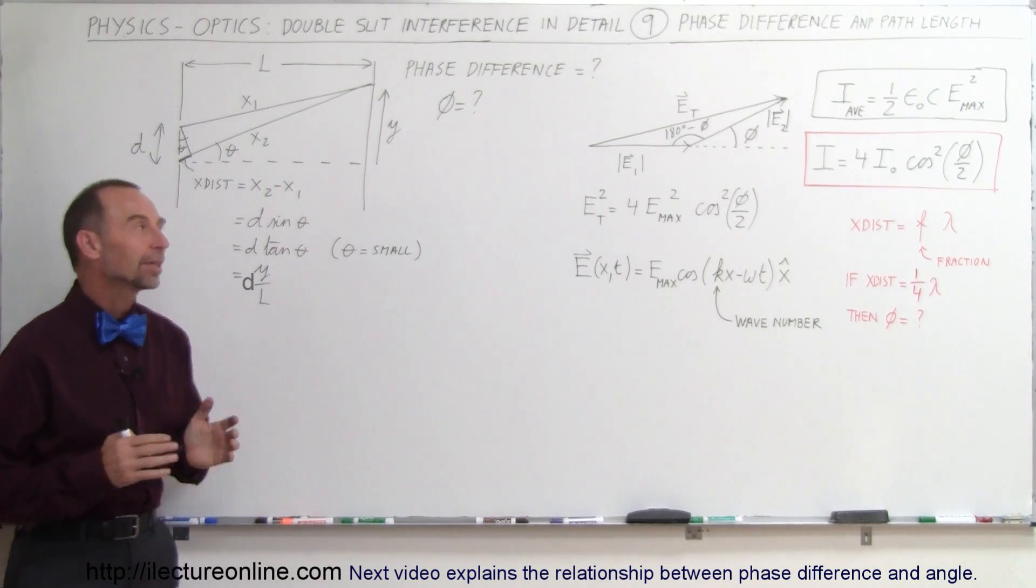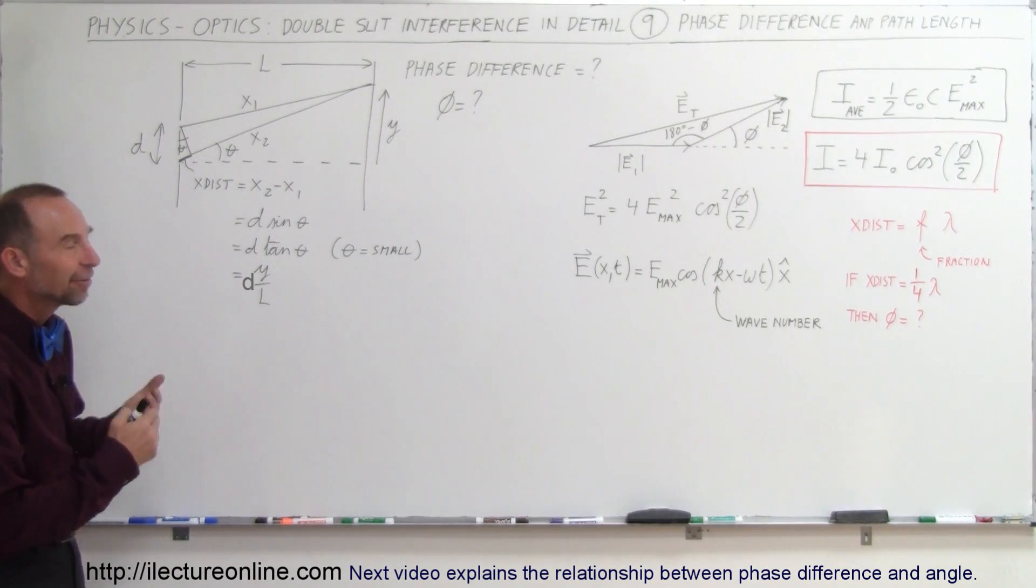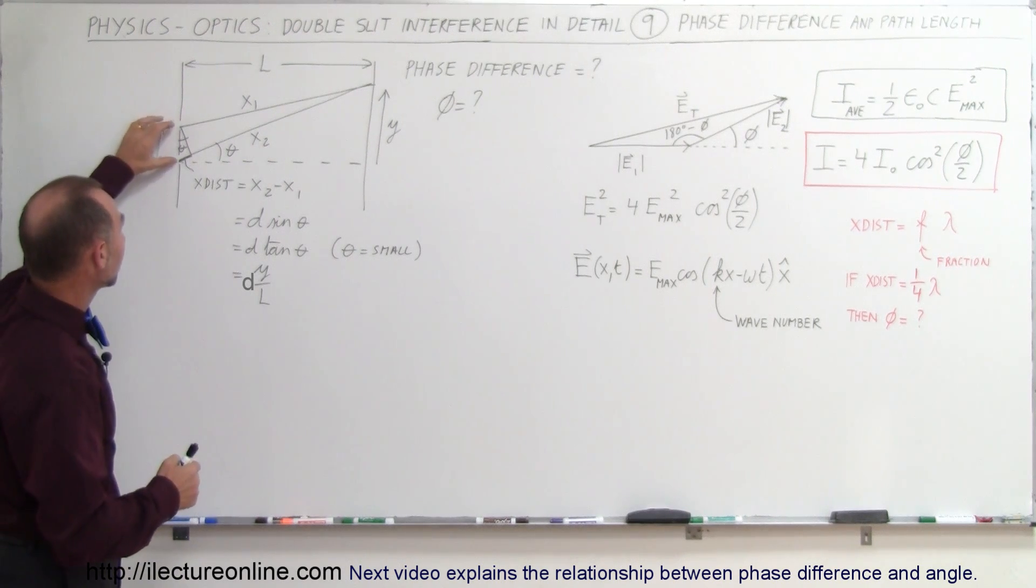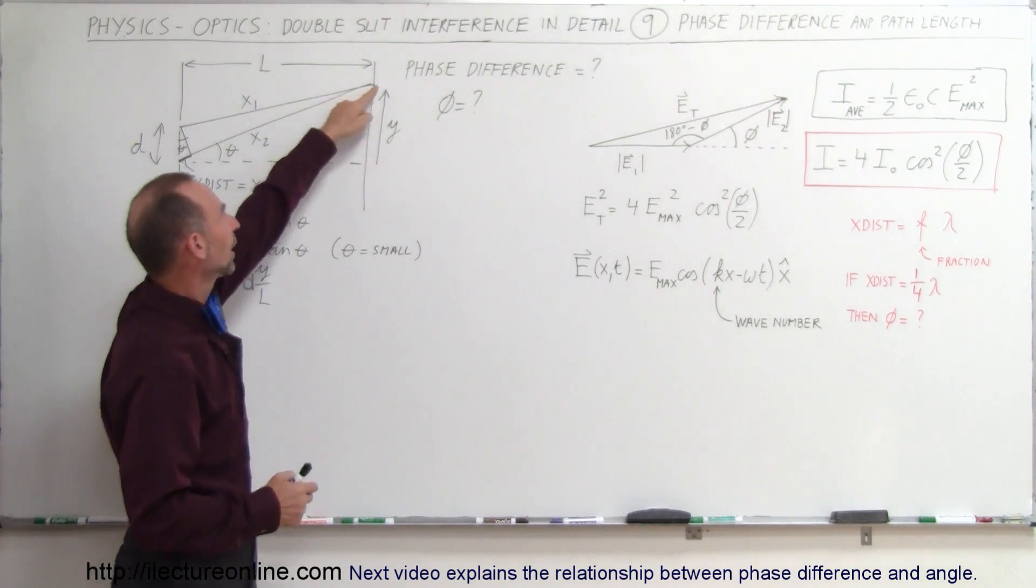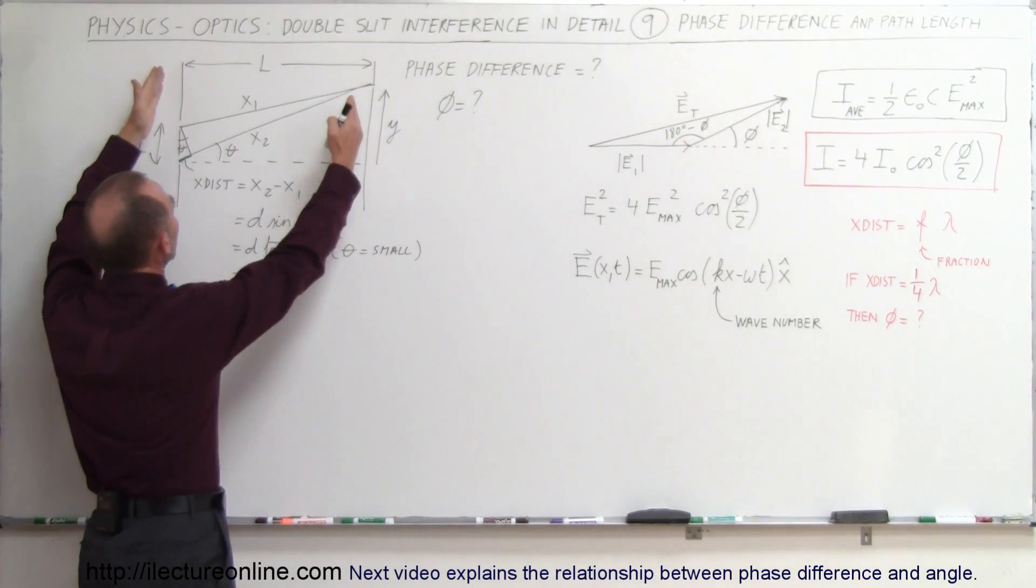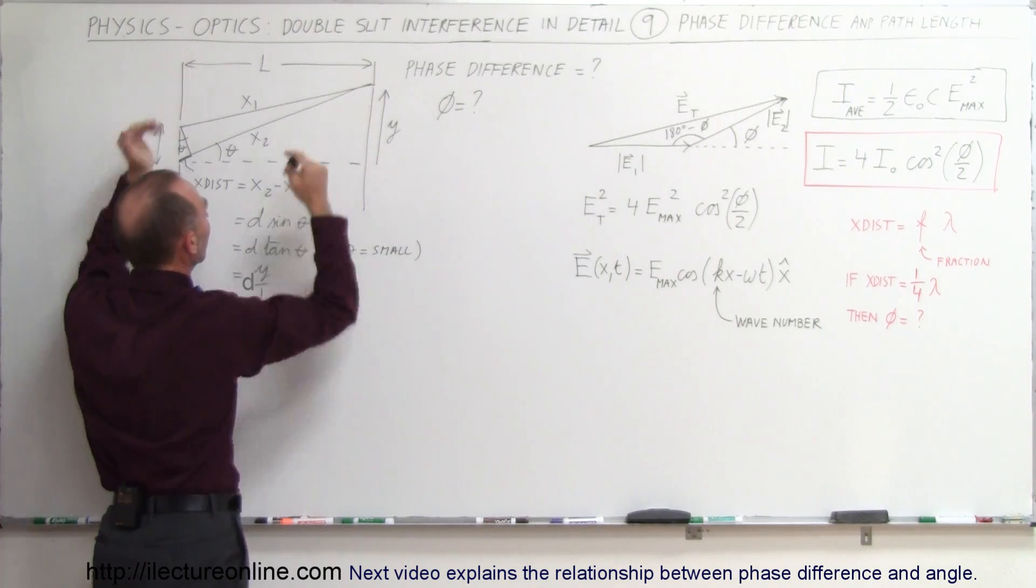Welcome to ilectureonline. Here we're going to take a closer look at how to find the phase difference between two light rays that come through a double slit and join each other on the screen at some distance y above the central maximum, when the distance between the slits and the screen is L.